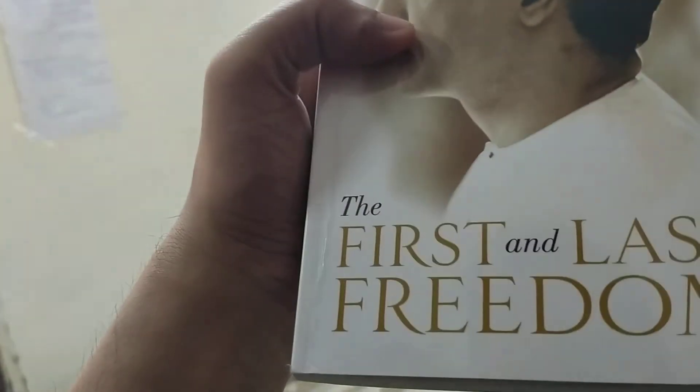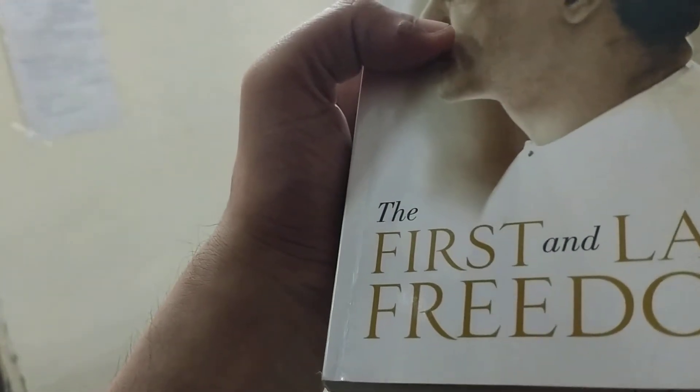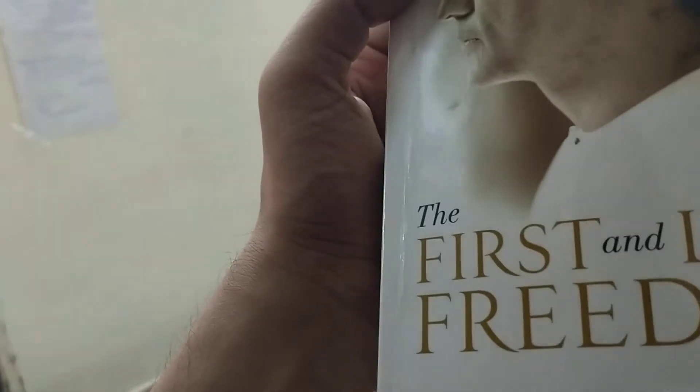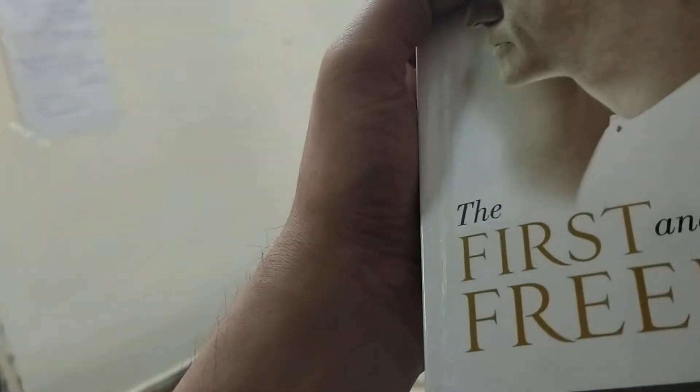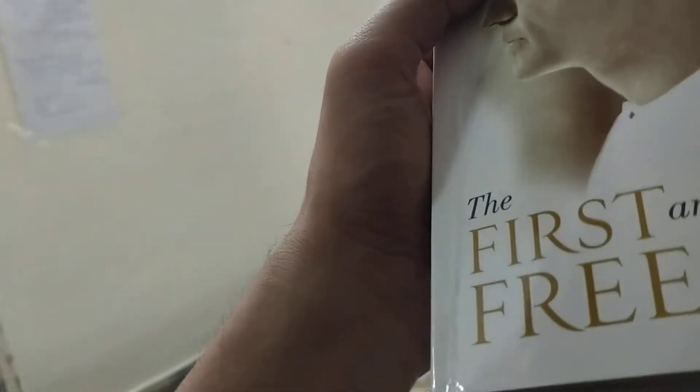So this is a new novel that I'm planning to read. This is year 2021 and it is almost end of March. The name of the novel is The First and Last Freedom. It's by J. Krishnamurti, one of the greatest thinkers of his age.